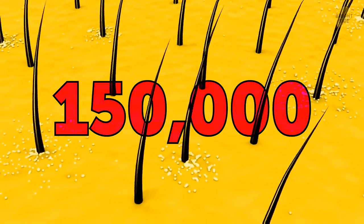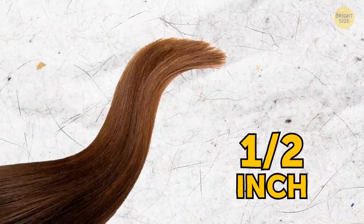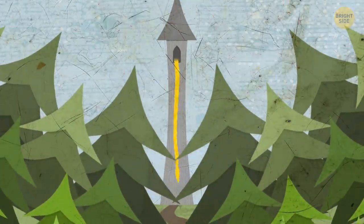Each human has roughly 150,000 hairs on their head. Every strand grows around 1 half an inch per month. If we added the growth from each hair, it would measure the distance of 10 miles in just one year.